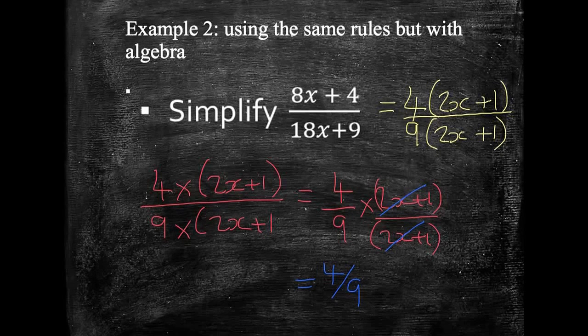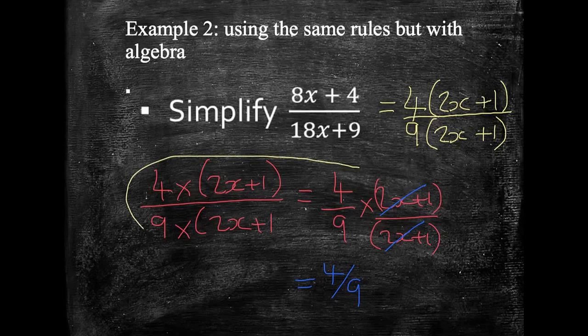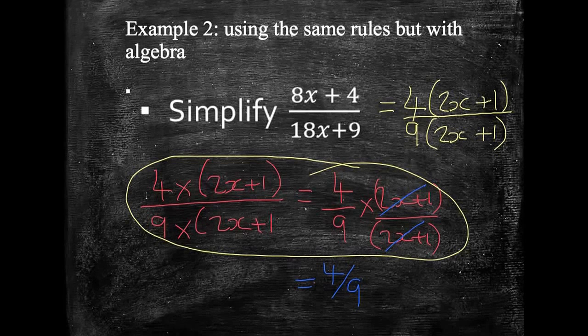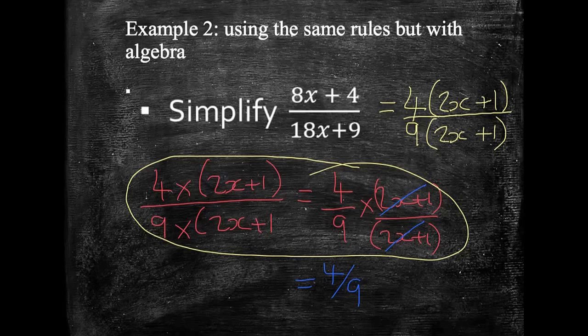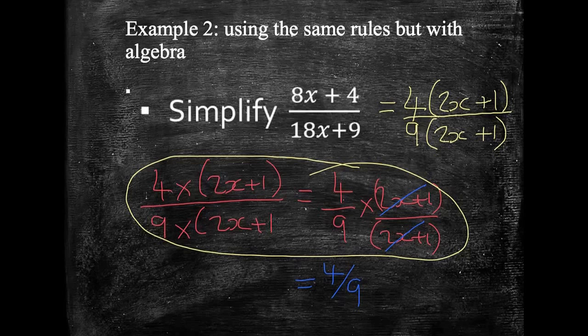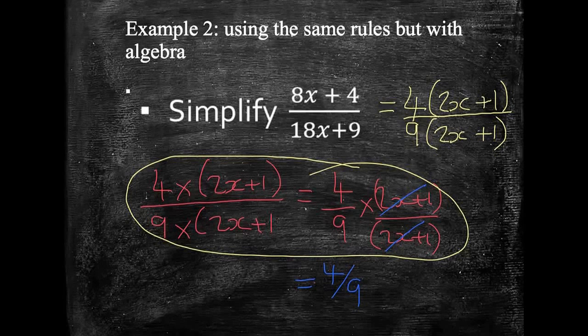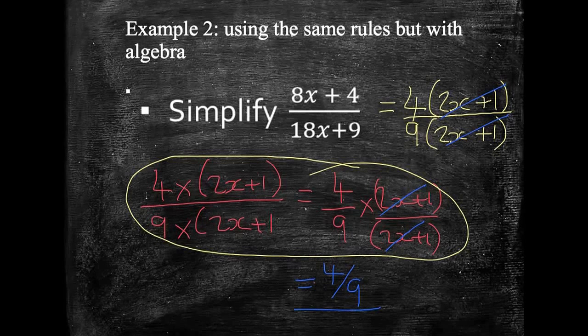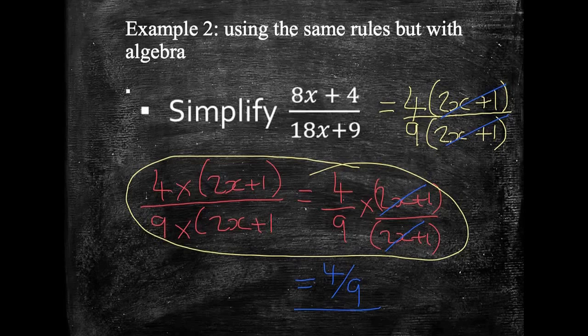Now, you're not expected to follow this process here and write all this down in the exam. You're not expected to do that and you're not required to do it either. I'm only showing you so you can see what actually is happening so that you don't start crossing things out that you can't. Okay, so you could straight away have gone, okay, 2x plus 1 there, 2x plus 1 there, cancels out and gives me 4 ninths. Final answer.